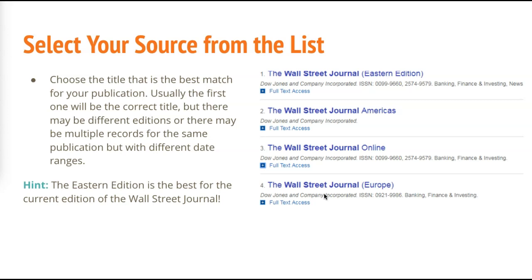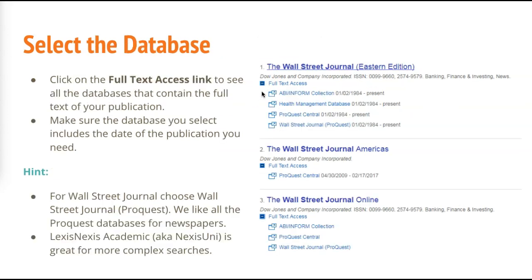There isn't always a better way to navigate this other than using your best guess, and then clicking on the little plus sign to see if it covers the date range that you need. When you click that plus sign, you can see a list of databases that contain the full text and the dates available. I'm going to click on Wall Street Journal ProQuest. Sometimes you'll have a hard time deciding which one to use, but you'll develop favorites and know which interface you prefer.